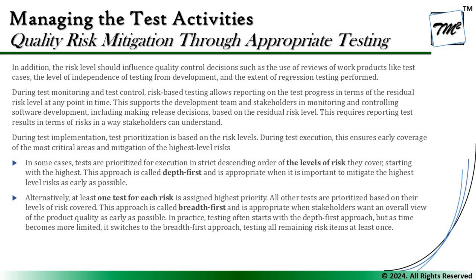During test implementation, test prioritization is based on the risk level; during execution this ensures early coverage of the most critical areas and mitigation of the highest-level risks. One approach is to execute test cases in strict descending order of the risk level they cover, starting with the highest first. When all test cases for the highest-priority risk are executed completely before moving to the next risk, we call this the depth-first approach — it looks forward to mitigating the highest-level risk as early as possible.